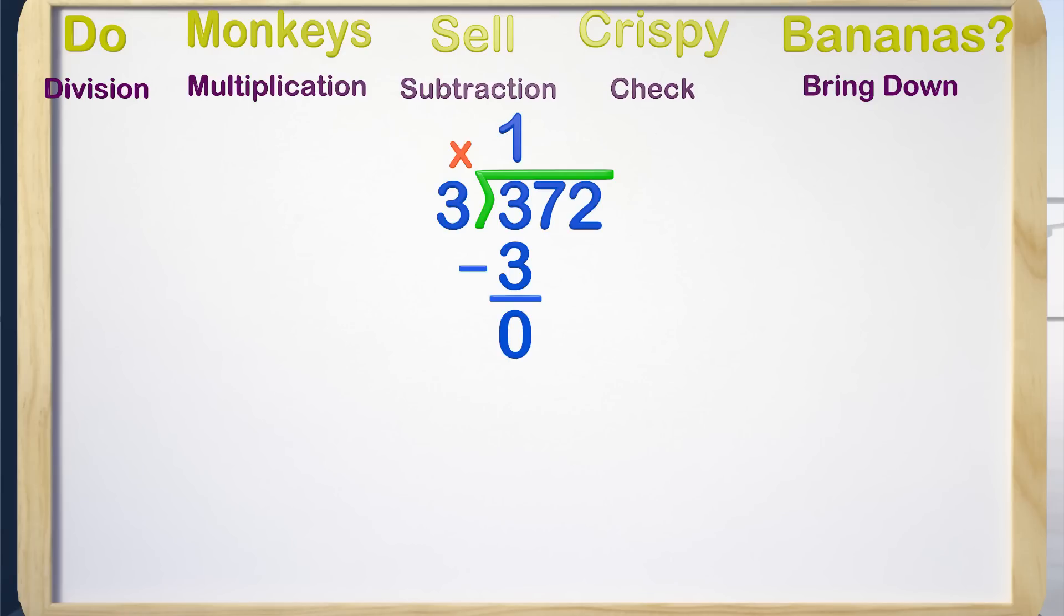Check is the next step. We check to see if the divisor 3 can still go into the number after subtraction. If it can go into this number, then we may have made a mistake. The answer is no, 3 does not go into 0, so by checking, we know we did it correctly. Up to this point, our last step is bring down. We bring down the next digit, which is 7.